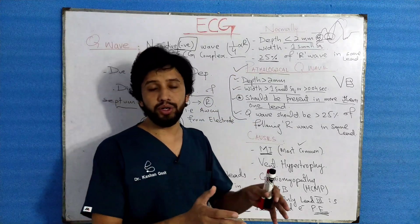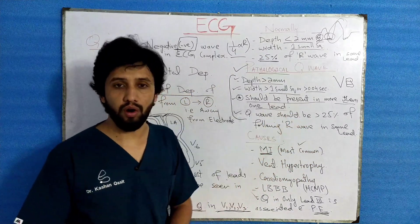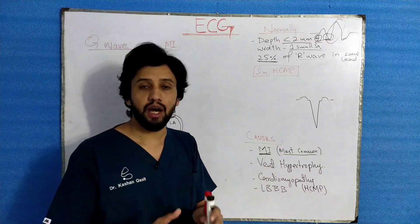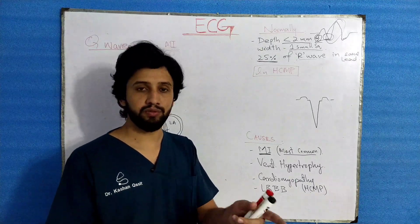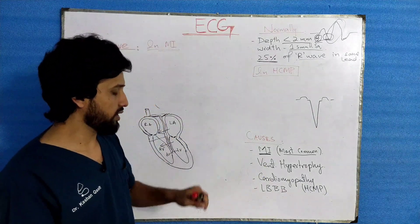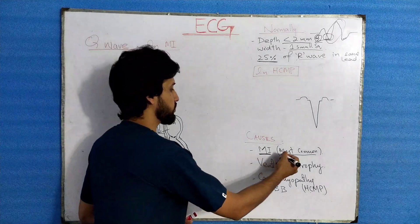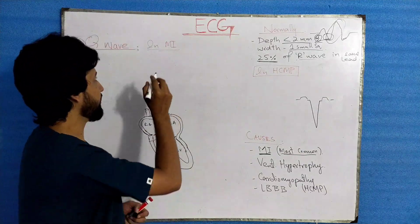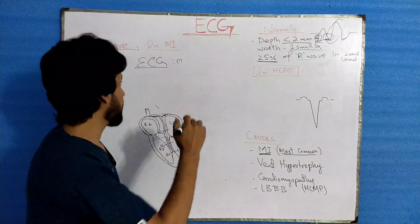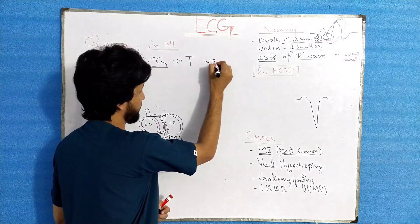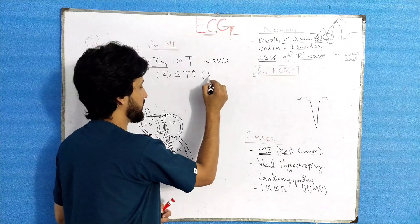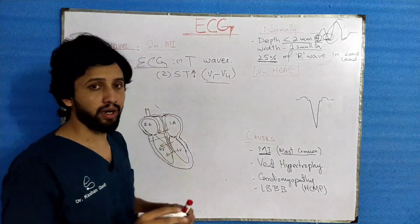Keep in mind all these points, causes, and criteria for pathological Q wave before describing any abnormality. I have discussed the causes — MI, ventricular hypertrophy, cardiomyopathy — now I will explain some of these. In myocardial infarction, the most common cause of pathological Q wave: in earlier ECGs of MI you will see hyper-acute tall T waves, and ST elevation in leads like V1 to V4.